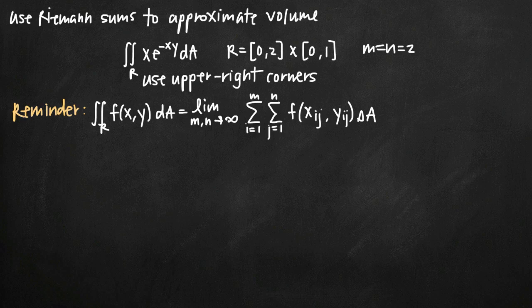Today we're going to be talking about how to use Riemann sums to approximate volume. In this particular problem, we've been given the double integral of xe to the negative xy. We've been asked to approximate the volume that lies below this function and above the rectangle defined by this interval: x interval 0 to 2 by the y interval 0 to 1.